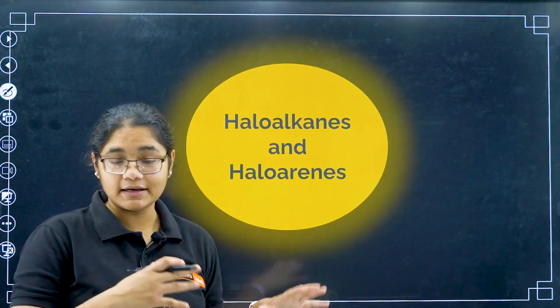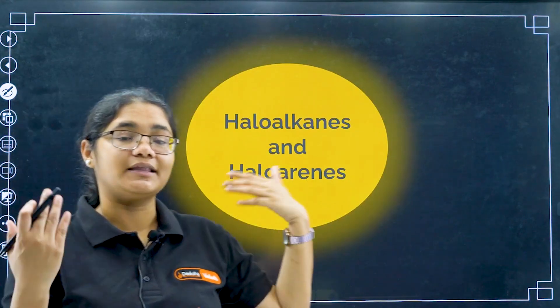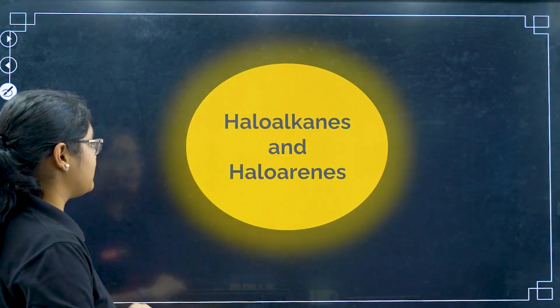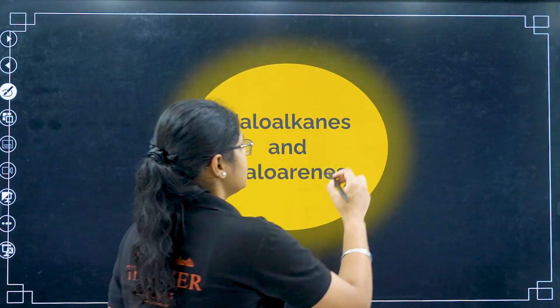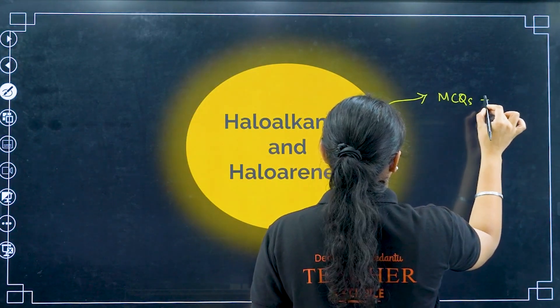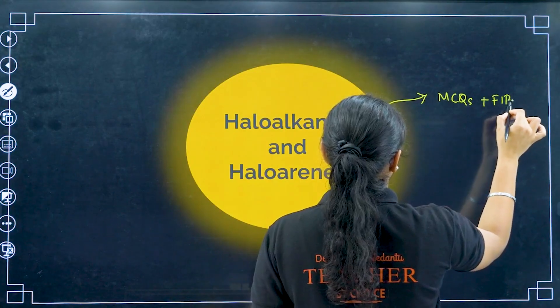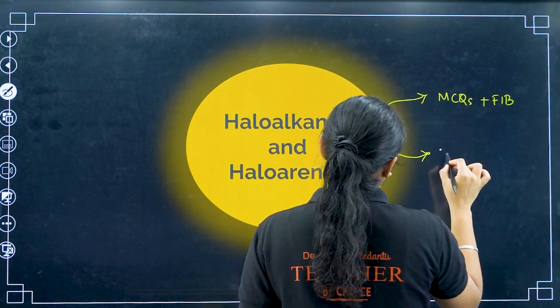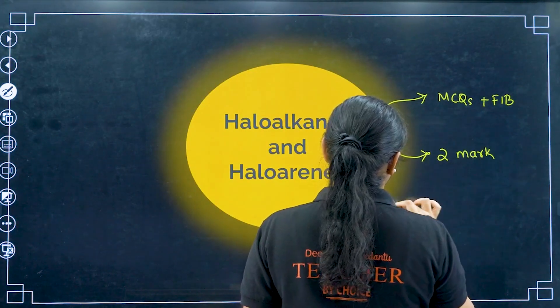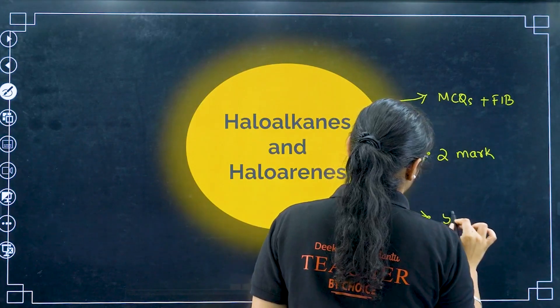Now moving to the third chapter: Haloalkanes and Haloarenes. The in-text questions and examples are already important here, so do those as well. In terms of question types, you will get MCQs plus fill-in-the-blanks, one or two two-marker questions, and a five-marker question.